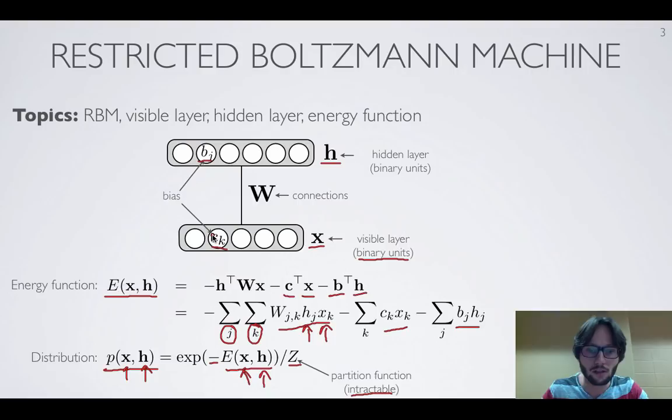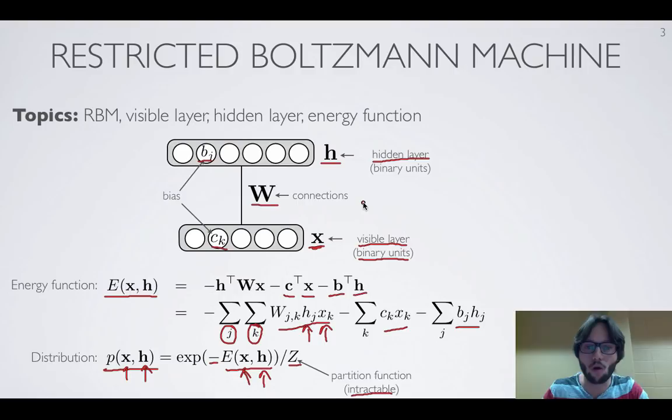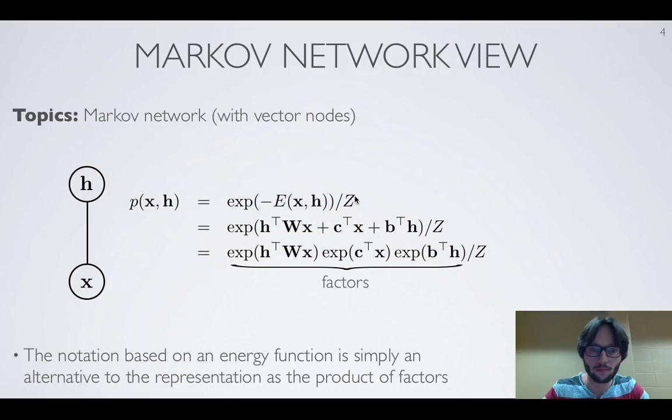The restricted Boltzmann machine has bias vectors and a matrix of connections. The part of the model corresponding to the input vectors is called the visible layer — visible because this is the data we actually see. The hidden layer is a random variable that is hidden because for a given input vector x we don't know the vector of hidden units. It is a latent variable in the model.